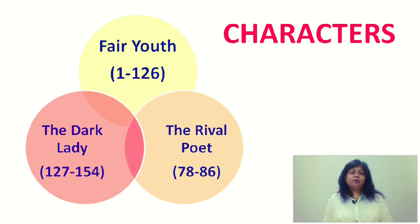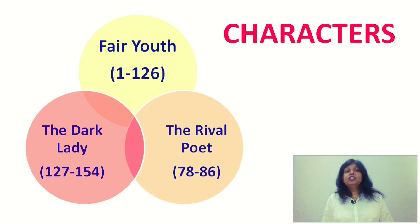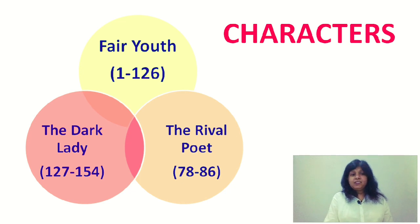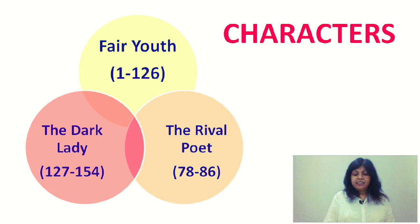From sonnet number 127 to 154, Shakespeare talks about a dark lady. This dark lady is also an unknown figure — she may be a real character or an imaginary one. These sonnets are of a serious type, talking about the dark lady and a speaker who is ashamed and guilty. These are complicated sonnets. There are also rival poets — we don't know who they are, but these may be the competitors of Shakespeare.